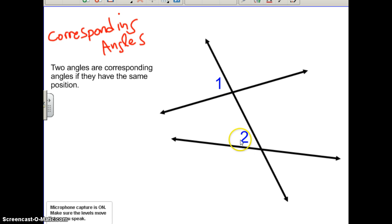So you notice when we talked about alternate interior angles there were only two pairs. Alternate exterior angles there were two pairs. But with corresponding angles there's going to be four pairs.